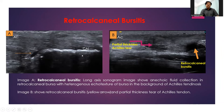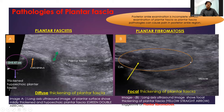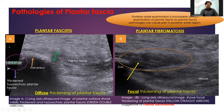Both images A and B show retrocalcaneal bursitis. Here is a case of left plantar neurofibromatosis along with the clinical image. Bilateral Achilles tendon xanthomas are demonstrated in the images. Coming to pathologies of the plantar fascia — posterior ankle examination is incomplete without examination of the plantar fascia, as plantar fascia pathologies can cause pain in the posterior ankle region. Image A demonstrates diffuse thickening of the plantar fascia indicating plantar fasciitis, and here is a focal thickening showing plantar fibromatosis.